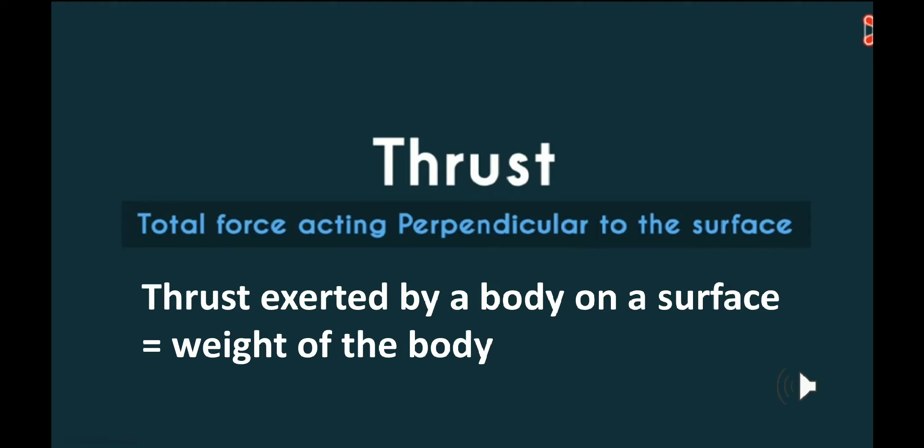Thrust exerted by a body on a surface is equal to the weight of the body. For example, if a book is kept on a table, the normal force acting on the table by the book is the weight of the book — and that weight is the thrust acting normally on the table. So thrust is a kind of force acting normally on a surface.